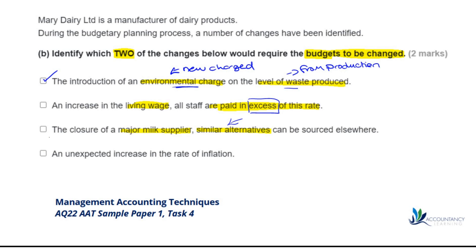Finally, by process of elimination, the last option: an unexpected increase in the rate of inflation. Inflation is going to affect all of our costs — it's the rate at which prices rise, so it affects everybody. All costs involved in manufacturing dairy products will increase, and therefore the budgets would have to be changed.